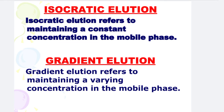Next is Isocratic Elution. Isocratic Elution refers to maintaining a constant concentration in the Mobile Phase. Next is Gradient Elution. Gradient Elution refers to maintaining a varying concentration in the Mobile Phase.